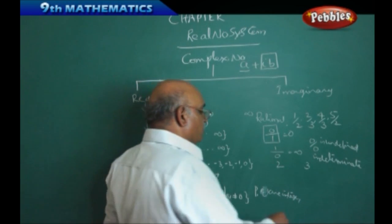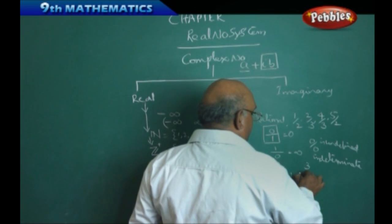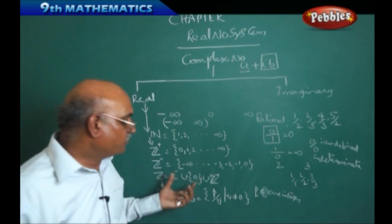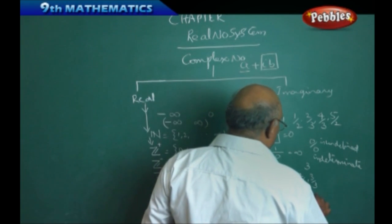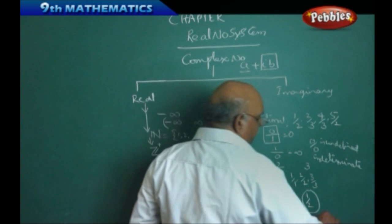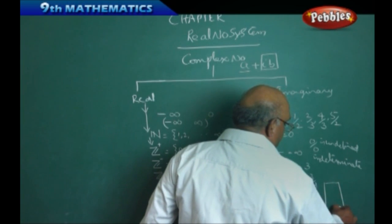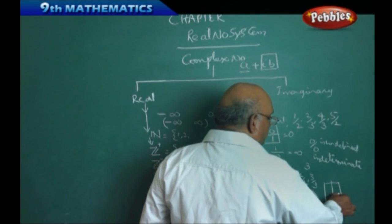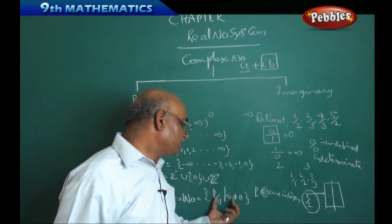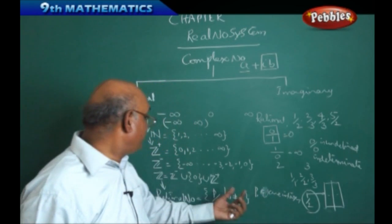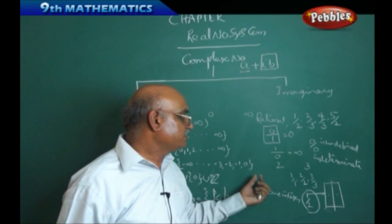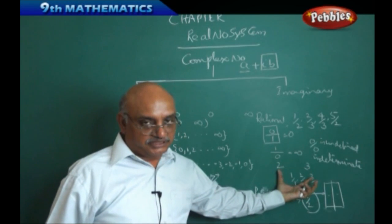Every integer is a rational number because we can express integers as 1/1, 2/2, 3/3, etc. But every rational number is not an integer — for example, 1/2 is not an integer; it is a fraction. If you take a square and divide it in half, taking only one part, that represents 1/2. So every rational number is not an integer, but every integer is a rational number. Our main task is: how many rational numbers can we generate between two real numbers?